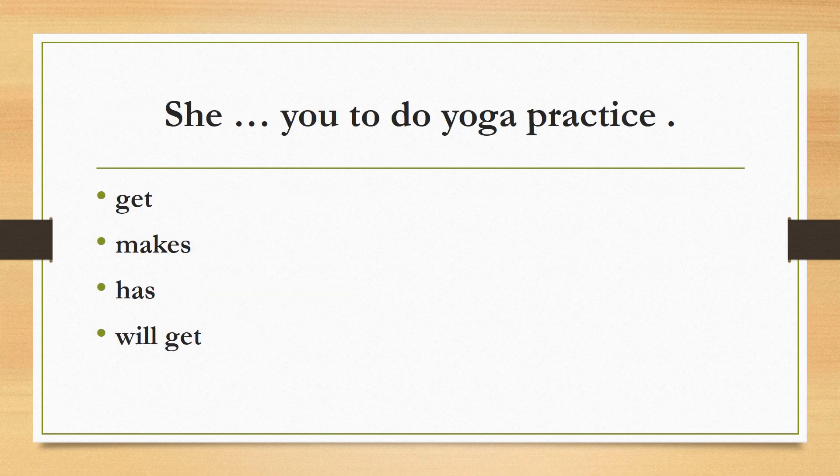She you to do yoga practice, get, makes, has, will get. The correct answer is 'will get'. She will get you to do yoga practice. In causative verb 3, subject plus get plus agent, then we use 'to plus verb 1'. So she will get you to do yoga practice, according to the options, the correct answer is 'will get'.